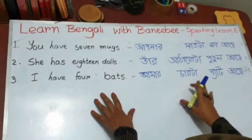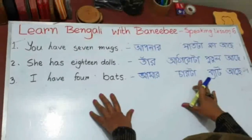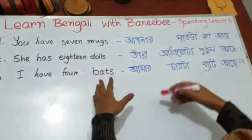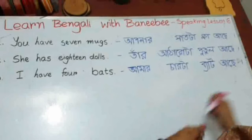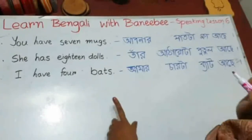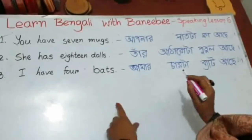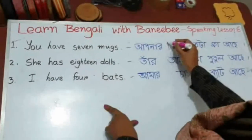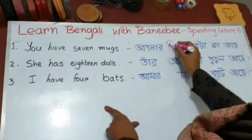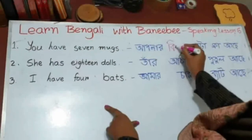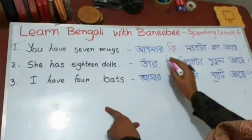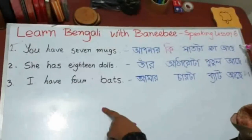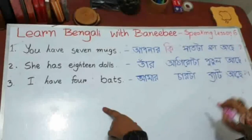But we need to make these into questions. How do we transform these sentences into questions? We will just add one word with them — and that word is 'ki'. For example: aapnar ki shakta mob achhe.